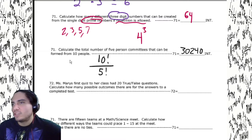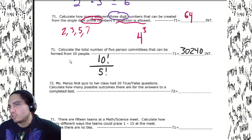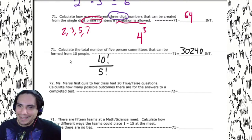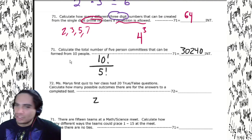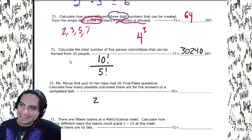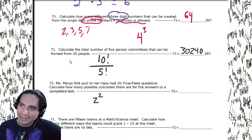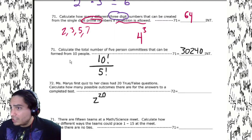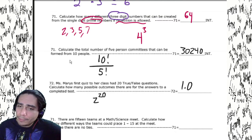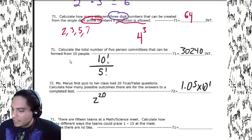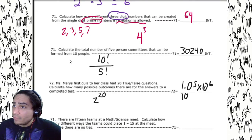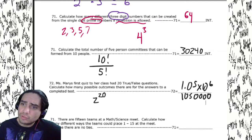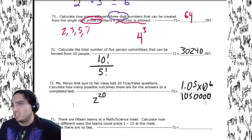Miss Mario gave her class a quiz with 20 true or false questions — just two answer choices for each question, 20 of them. That's 2 to the 20th power. It's not an integer problem — we get 1.05 times 10 to the 6th.